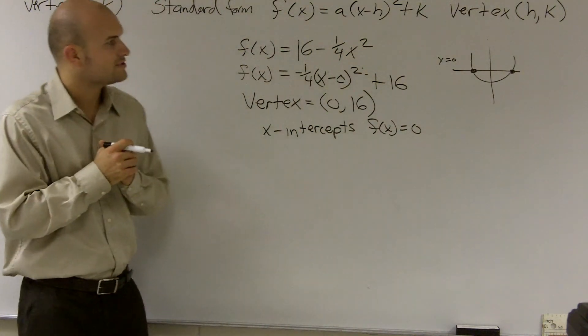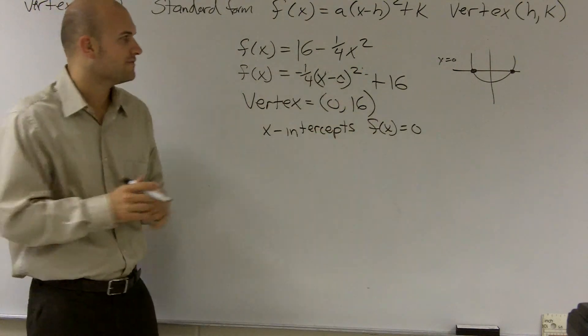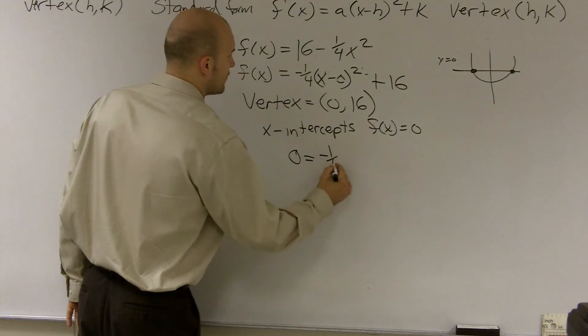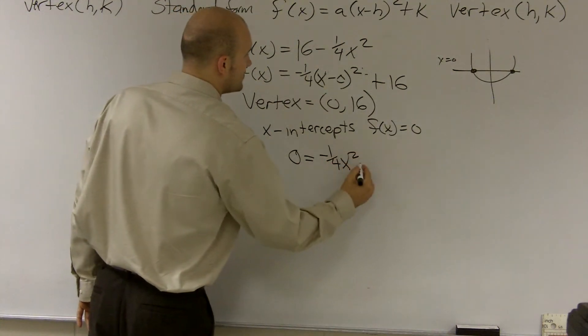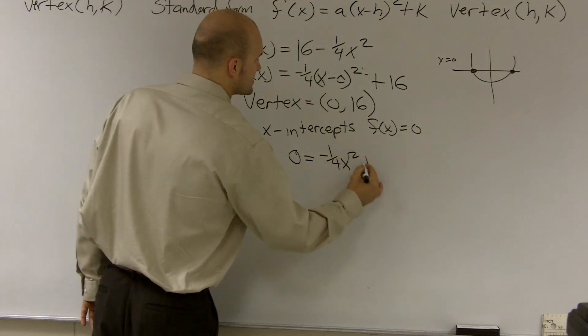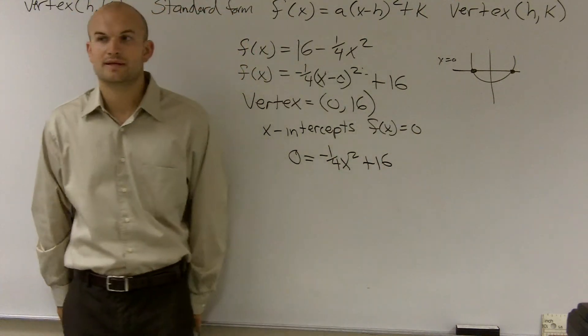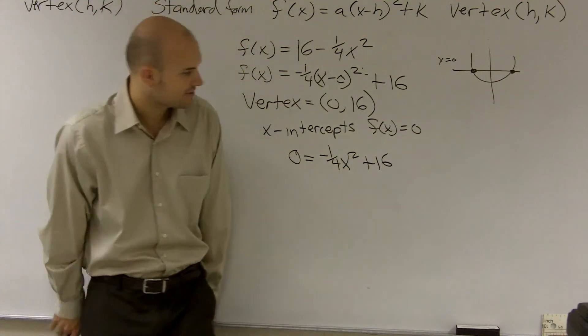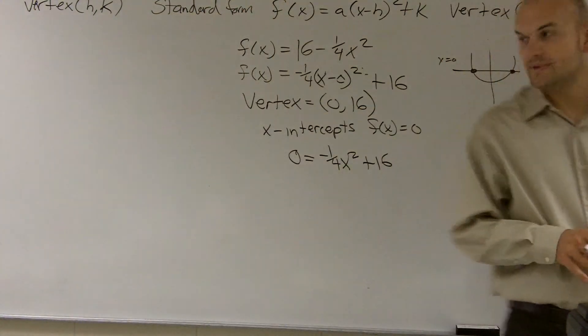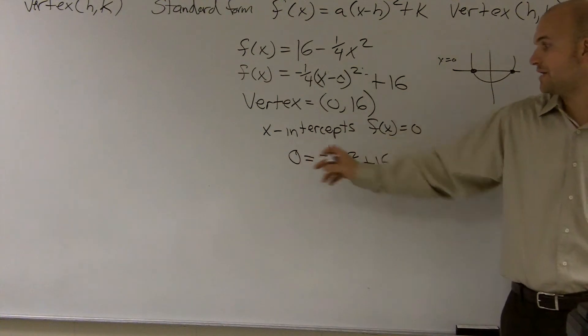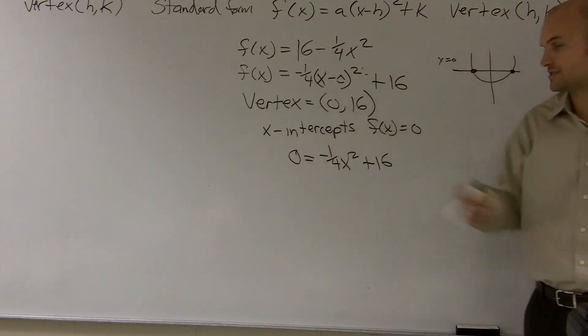So what we need to do is we need to write our equation with f(x) equals zero. So zero equals negative one-fourth x squared plus sixteen. And then from here, what we need to do is we need to determine what our values of x are going to be. So what we need to do is we need to solve for x. We need to find the values of x when our function is equal to zero.